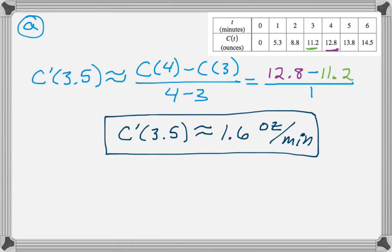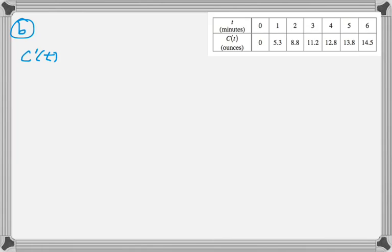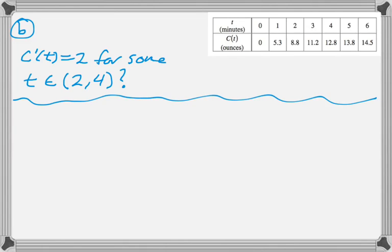The next part is asking if there is a time when C prime of T equals 2 for some T in between 2 and 4, which should just look like the mean value theorem to you. So let's hope that the mean value theorem applies.